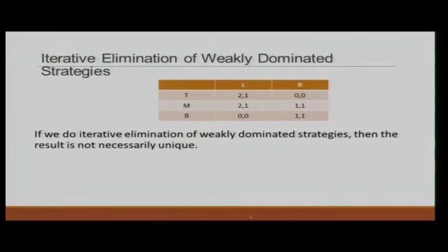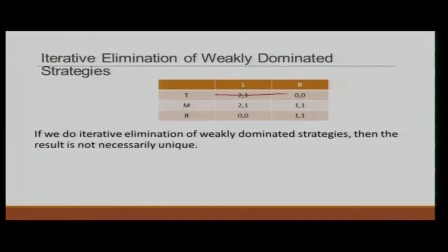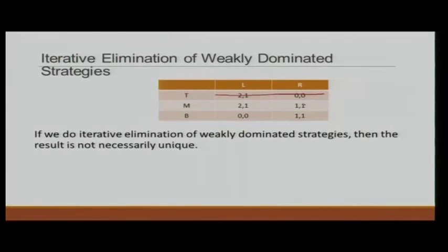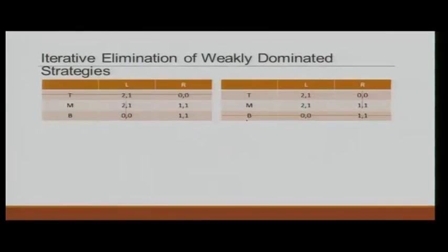Let us look at this game. Do we have weakly dominated strategies? We have M weakly dominates T: M is at least as good as T no matter what the other player is doing, and strictly better than T when player 2 is playing R. So M weakly dominates T, and we can remove T. Once we remove T, because of common knowledge player 2 knows player 1 would never play T. Then for player 2, R weakly dominates L, so L can be removed.